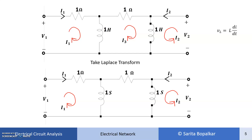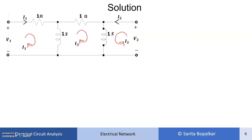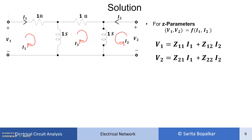We apply KVL to loop 1, loop 2, and loop 3. Z parameters mean V1 and V2 expressed in terms of I1 and I2. The standard Z parameter equations are: V1 = Z11·I1 + Z12·I2, and V2 = Z21·I1 + Z22·I2.